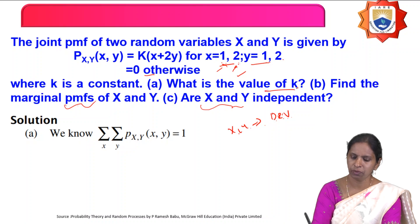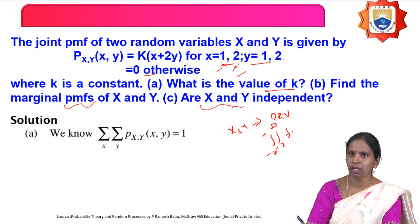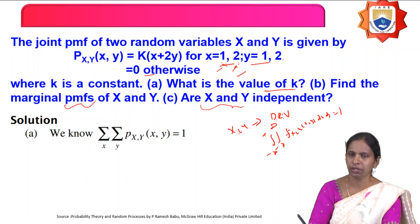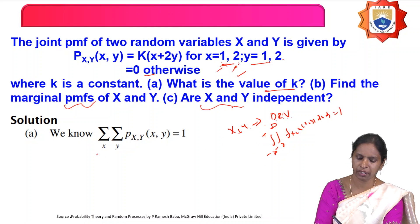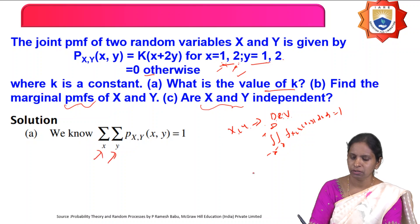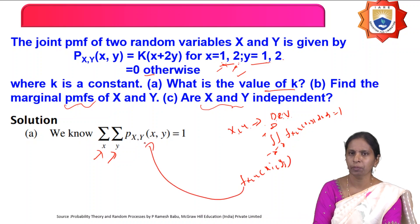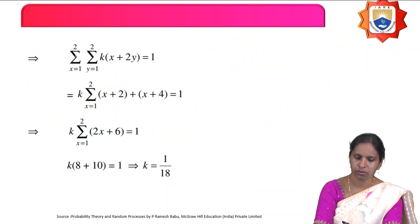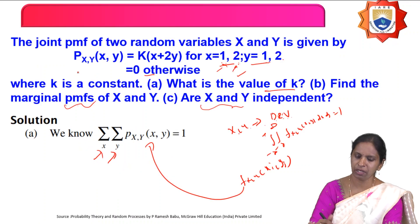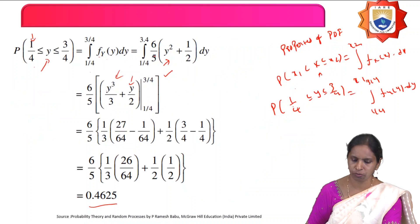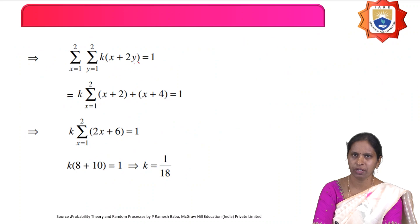To find the value of k, we use the property that for discrete random variables, the sum over all xi and yj of p(xi, yj) equals 1. In place of integration, we write sigma. So: sigma over x = 1 to 2 and y = 1 to 2 of k(x + 2y) = 1.